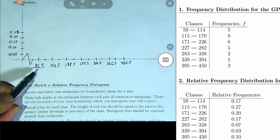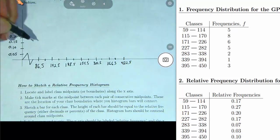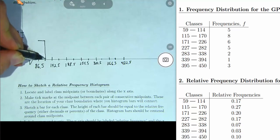The relative frequency of that class, which is .17, so above the midpoint, I'll find .17, and then I'll draw a bar that's centered at that midpoint.